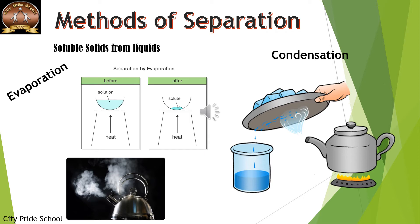Water vapor is rising because of the process of evaporation — the water changes into its vapor state. How do you know that water has evaporated? When you bring a colder surface near those vapors, you will observe that these vapors condense and change back to liquid water, which is collected in a beaker.